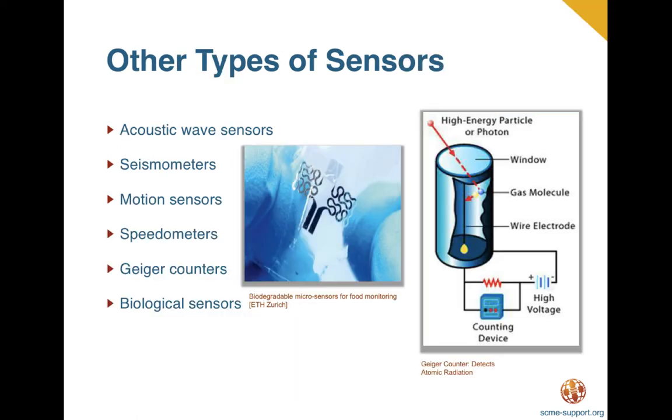Other types of sensors include acoustic sensors such as acoustic wave sensors which measure the wave velocity in an environment to detect the chemical species present, and seismometers which measure seismic waves. There are also motion sensors such as accelerometers and gyroscopes which detect motion, acceleration, rotation, and vibration. Speedometers which measure speed, Geiger counters which detect atomic radiation, and biological sensors which can sense and measure specific biological molecules in the human body.